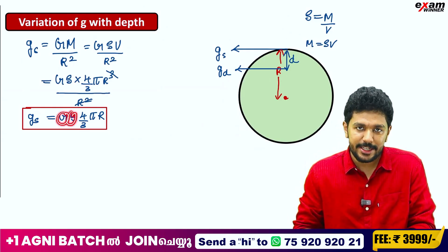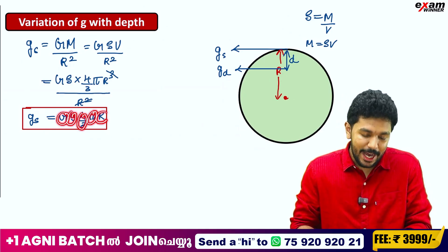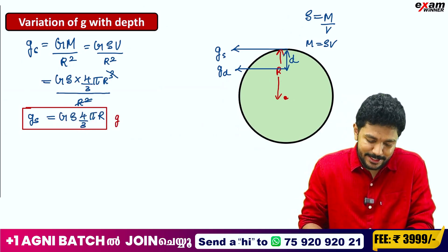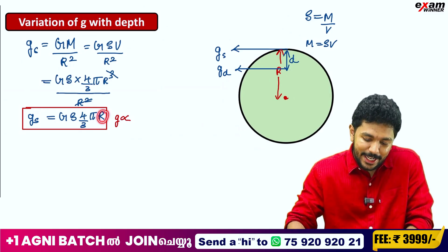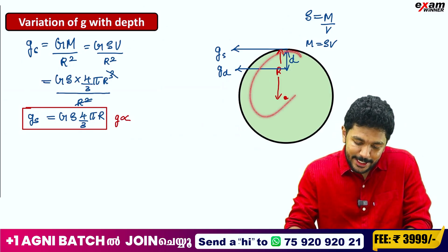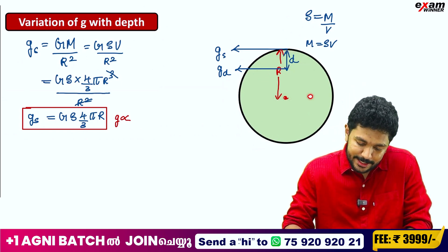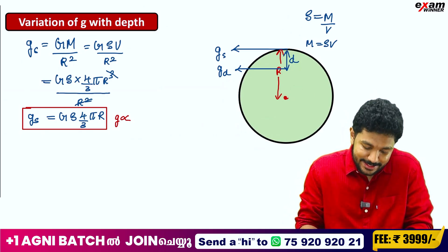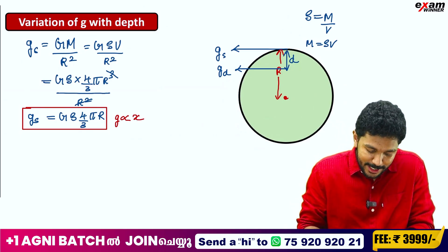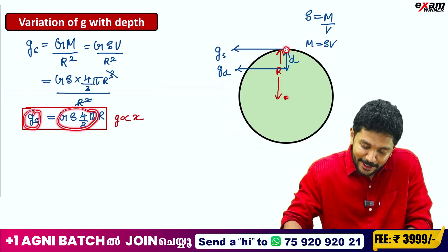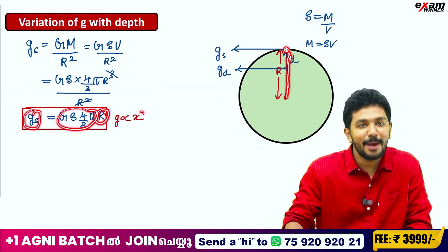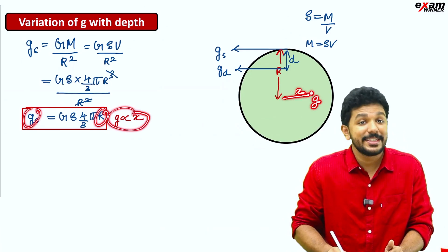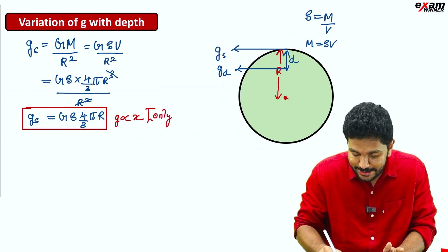G is constant, density is constant, 4 by 3 is constant, pi is constant, R is the radius and that is constant. But one thing you can say is that g is generally proportional to the distance from the center. If you want a point inside, say at distance x from the center, g will be proportional to that distance x. This is only applicable inside the earth.